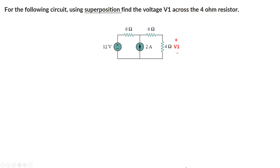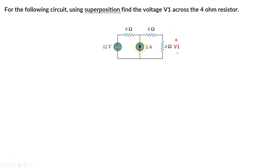Here is a circuit and the goal is to use the superposition principle to find the voltage across this 4 ohm resistor, labeled as V1. Superposition basically says that if I find the influence of this 12 volt supply on this 4 ohm independently without the 2 amp current source, and then find the influence of this 2 amp current source independently without the 12 volt supply, then I can combine those two influences to get the overall voltage across the 4 ohm resistor.